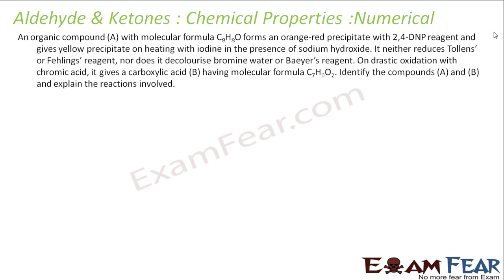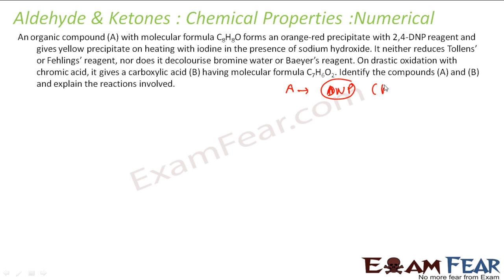...an orange precipitate with 2,4-DNP reagent. So compound A gives an orange-red precipitate with 2,4-DNP reagent, which means it is either an aldehyde or a ketone. Let me draw this out — the DNP test tells us it's either an aldehyde or a ketone.